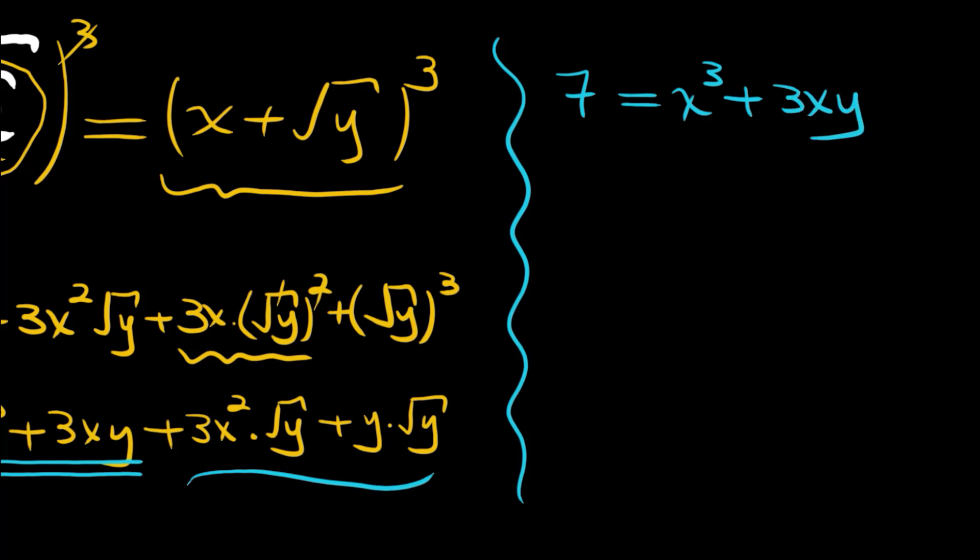And 5 root 2 equals 3x square plus y times root y. Now we have such a system to be solved.